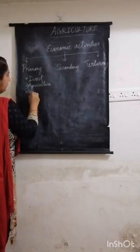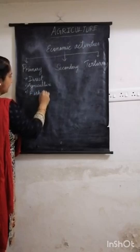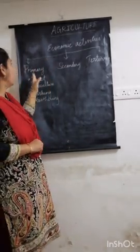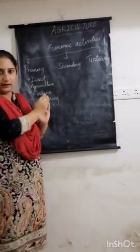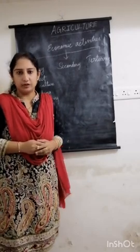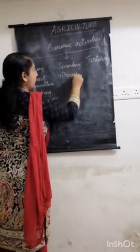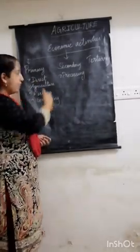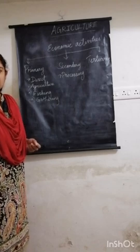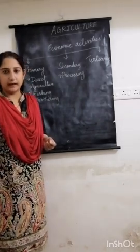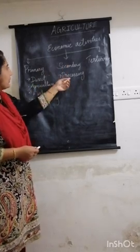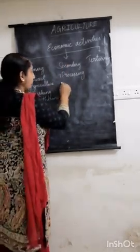The next one is secondary activity. Secondary activity involves processing your natural resources — when you process primary resources and produce a manufactured good, it is called secondary activity. For example, if you have wheat as a primary product and it is taken to a factory and processed into bread or wheat flour, that is your secondary activity.